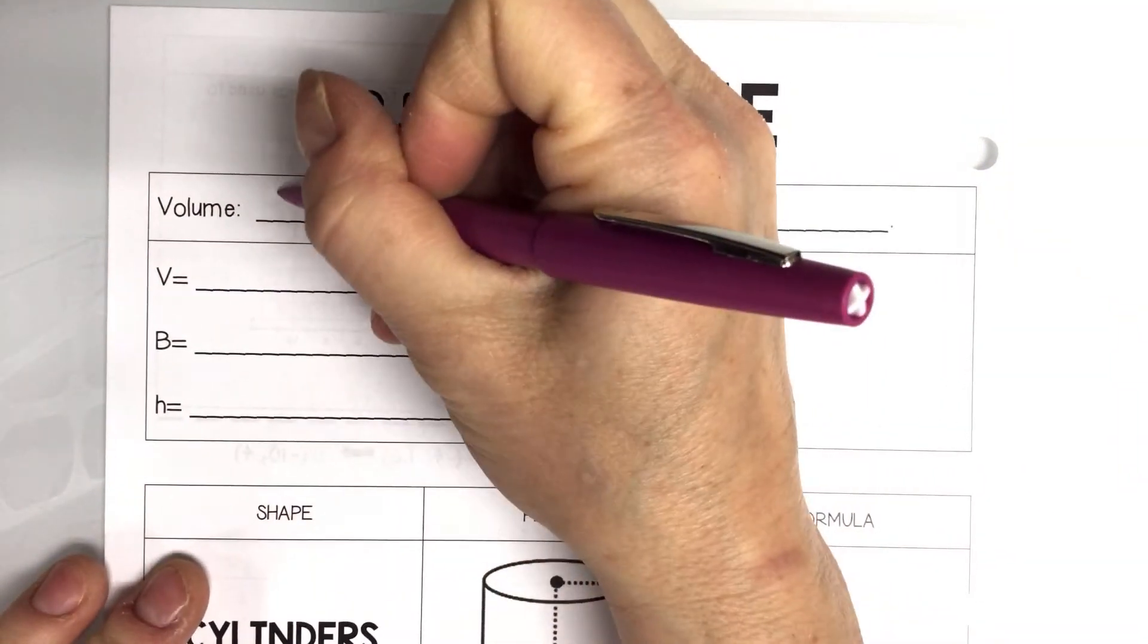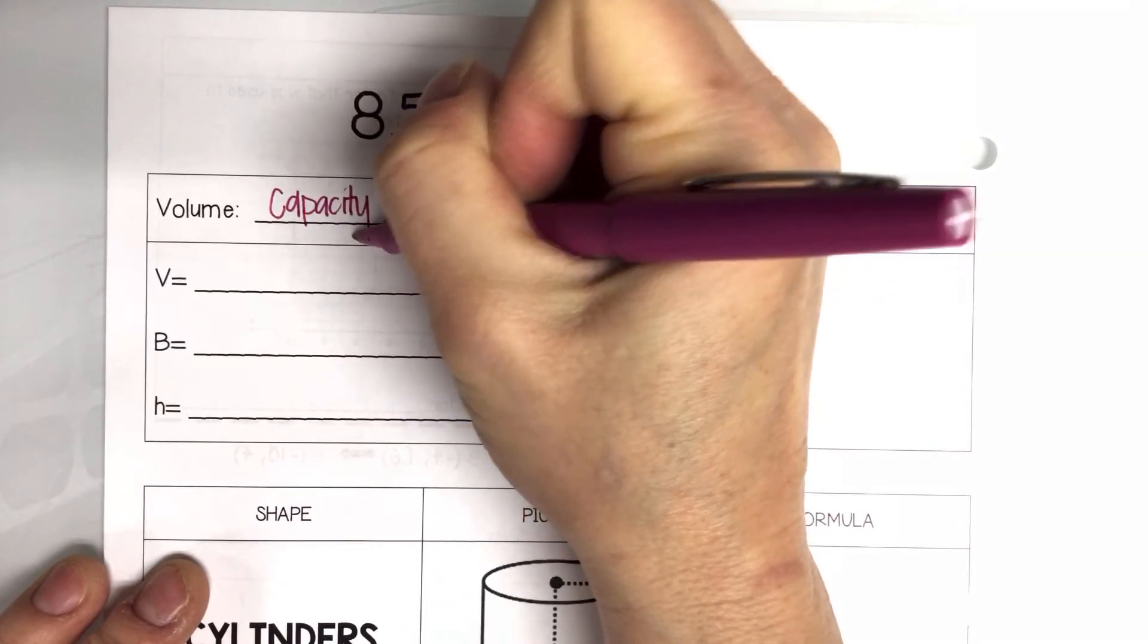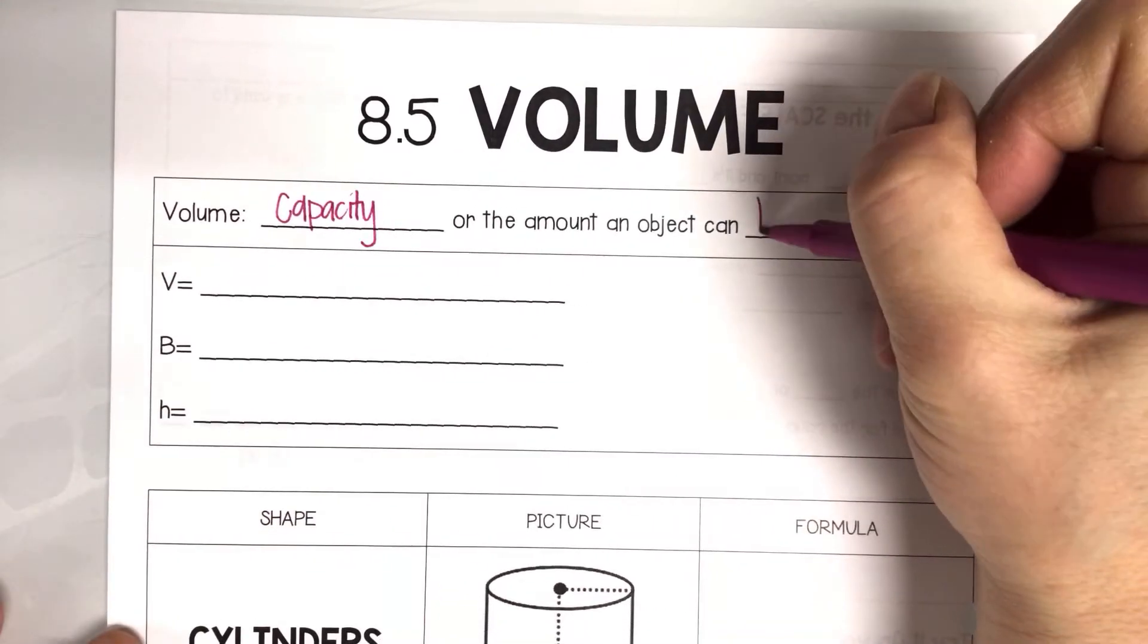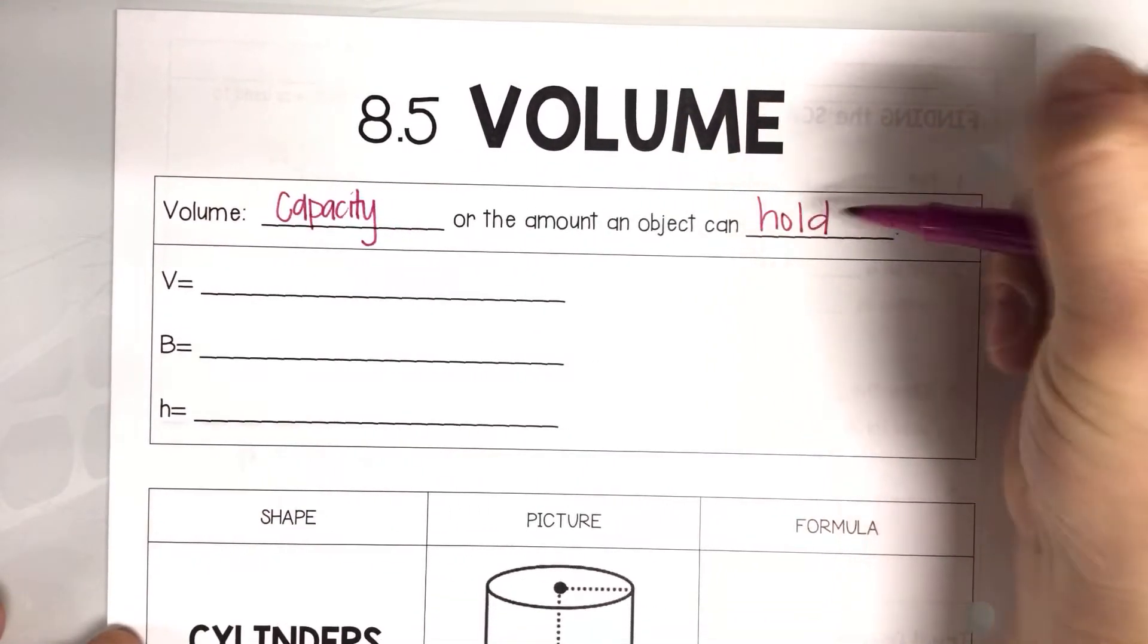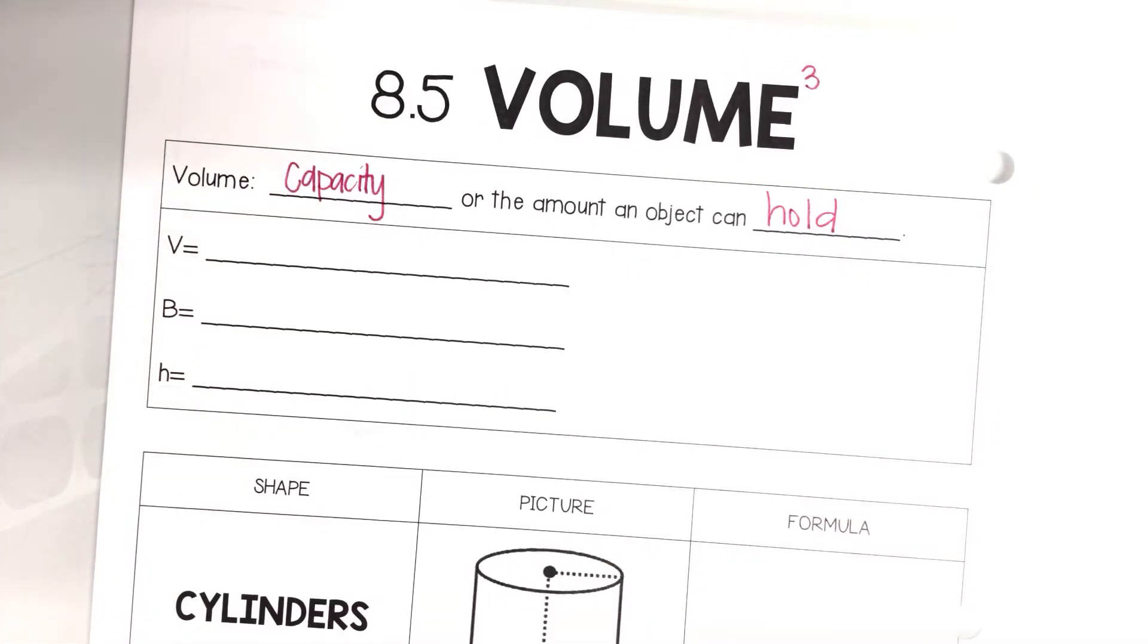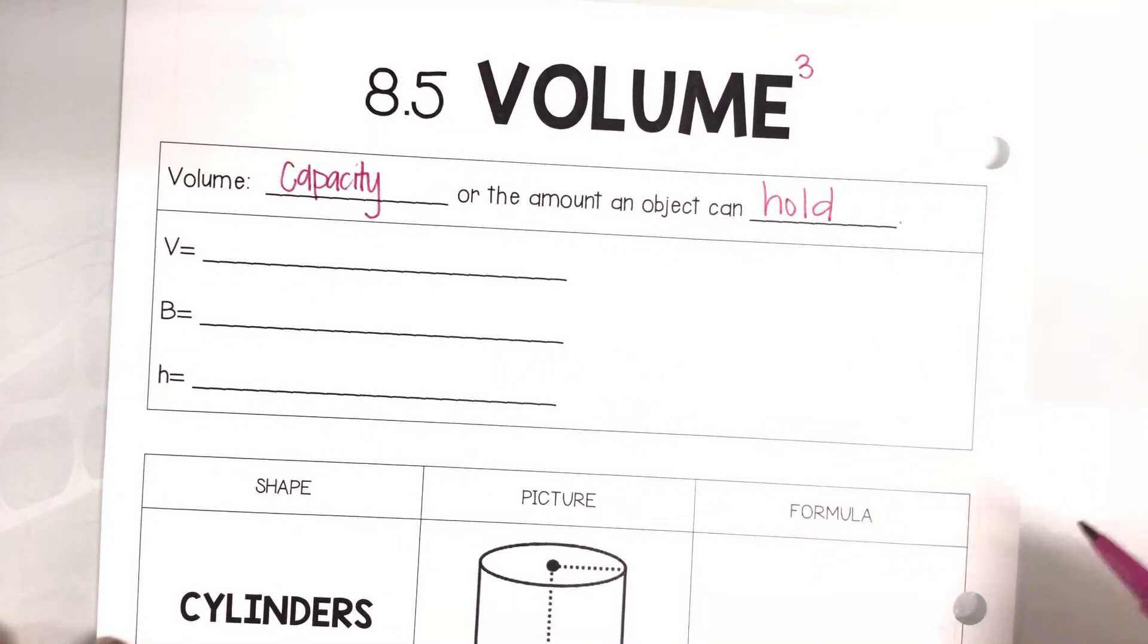Volume measures capacity, which means the amount an object can hold. Volume is always written in cubic units because there's three dimensions: a length, a width, and a height. So that one is written with units cubed, cubic units.